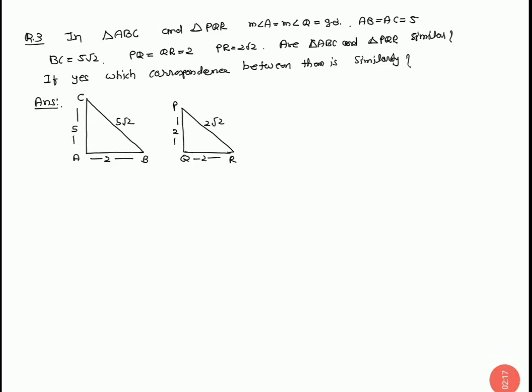Now we start question number 3. In triangle ABC and triangle PQR, angle A equal to angle Q equal to 90 degrees. AB equal to AC equal to 5, BC equal to 5 root 2. In another triangle, PQ equal to QR equal to 2, PR equal to 2 root 2. Are triangles ABC and PQR similar? If yes, which correspondence between them is a similarity? Now we start by drawing the triangles.